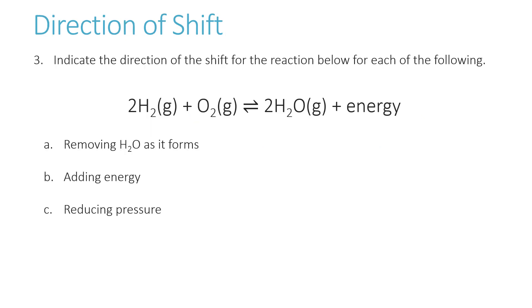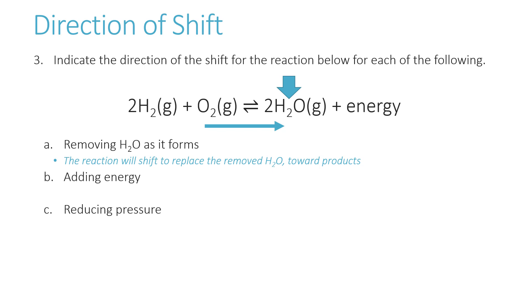The next question is a Le Chatelier question: indicate the direction of the shift for each of the following. The first one is removing water. This is going to cause a shift toward the products, because whenever we remove something, the reaction shifts to replace it. Since we're removing a product, we shift toward products.